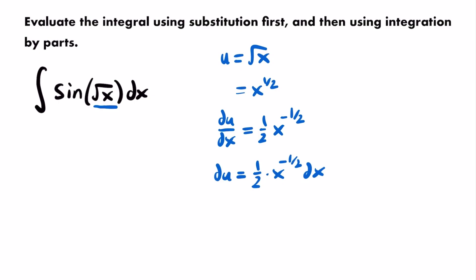At this point, typically in the u-substitution process, whatever du equals, we need to find it within our integral to rewrite it in terms of u. But as predicted, that's not the case here — we can't find (1/2)x^(-1/2) dx within this integral; I only see dx. This would not be a problem if only a constant were missing, but since we're missing a function of x, we have to rewrite this expression. The first thing I'll do is move x to the negative 1/2 power to the denominator, making the exponent positive. So we have du = 1 divided by 2x^(1/2) times dx.